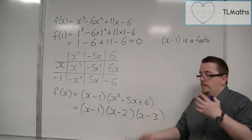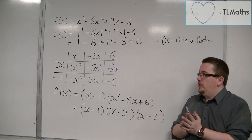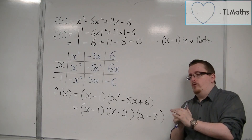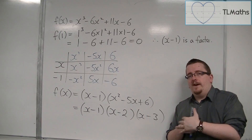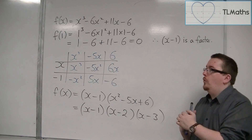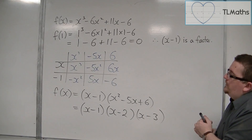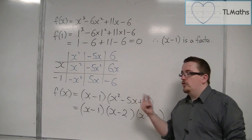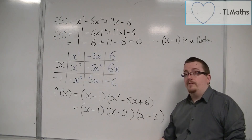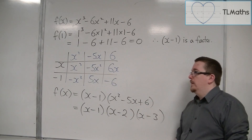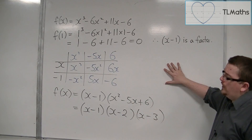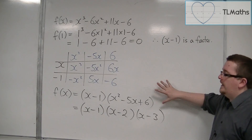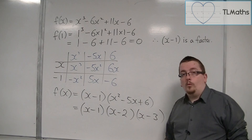If you were just writing down any old cubic to see if this works, in general the likelihood of you being able to find a factor is quite slim. And even if you did, it's not necessarily true that the quadratic you get afterwards can be factorised. So this process is a lot quicker than just finding factors and can get you at least part of the way.